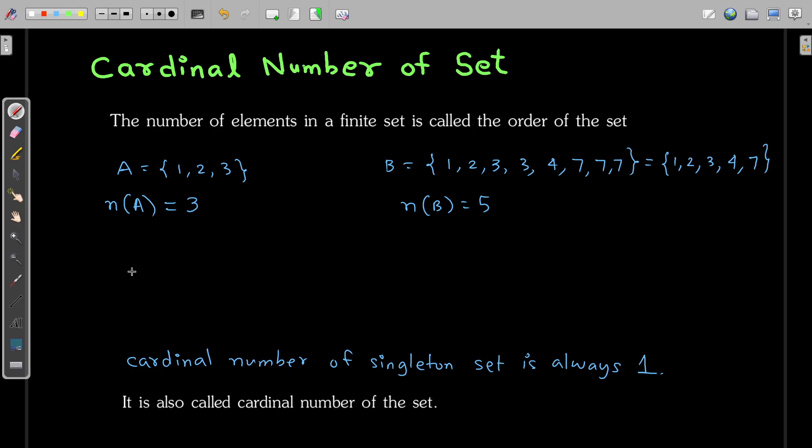Now, if you talk about empty set, let us say this φ represents empty set. If I ask number of elements present in empty set, it is 0. Again, this is also an important point that your empty set always contains 0 elements. Just like how your singleton set has the cardinal number always 1, similarly for this empty set, the cardinality is always 0.